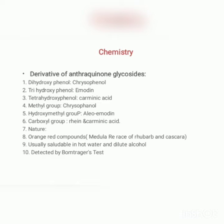Chemistry of anthraquinone glycosides: derivatives include dihydroxyphenol — chrysophenol; trihydroxyphenol — emodin; tetrahydroxyphenol — carminic acid. Substituent groups: methyl group — chrysophenol; hydroxymethyl group — aloe-emodin; carboxyl group — rhein and carminic acid. By nature they are orange-red compounds found in medullary rays of rhubarb and cascara, usually soluble in hot water and dilute alcohol, and detected by Borntrager's test.